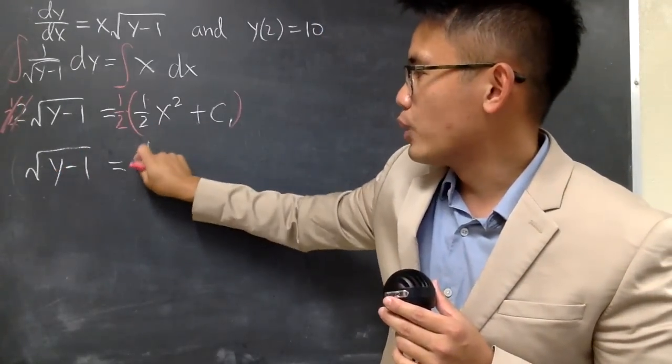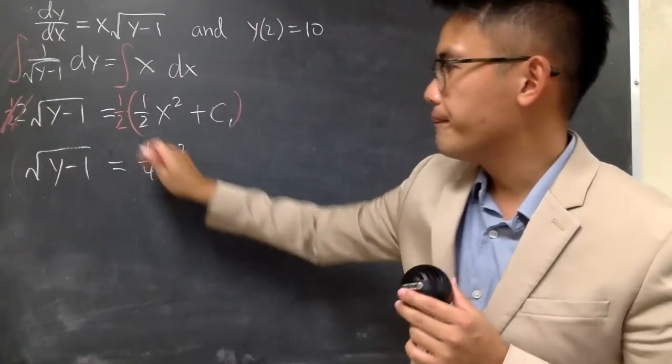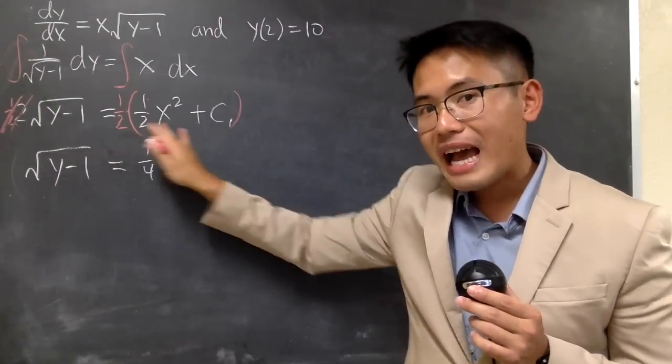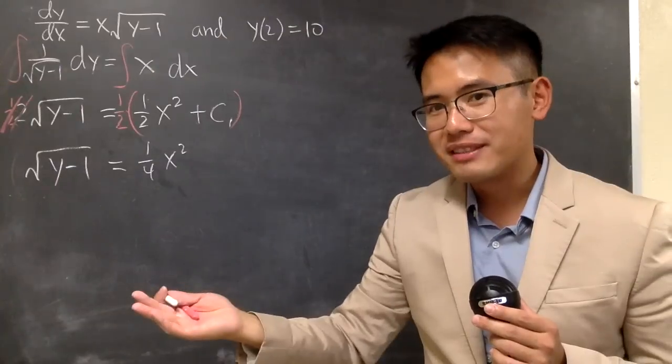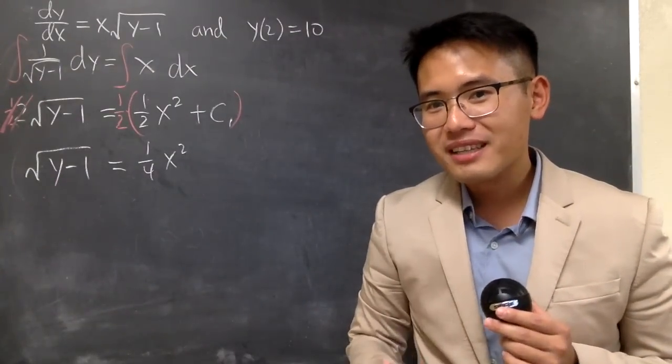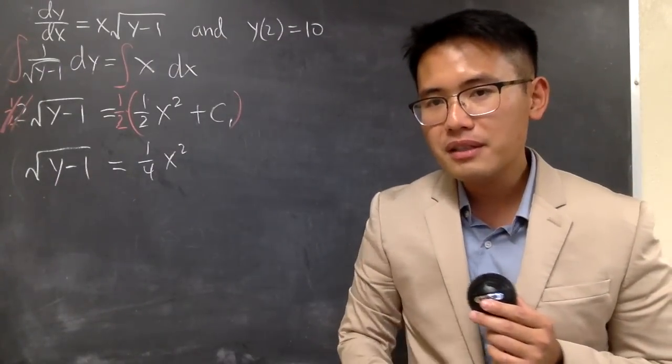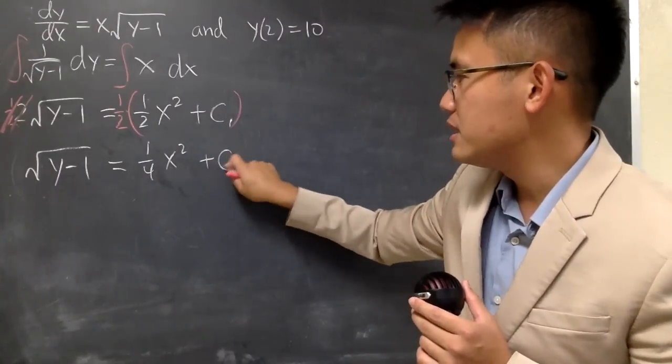Equals to this times that is 1/4 x squared and 1/2 times c1. 1/2 is constant, c1 is also a constant, a constant times a constant is another constant, so I can just put plus c2.